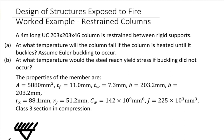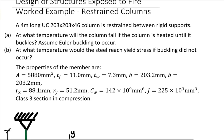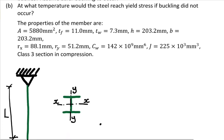A four meter long UC203x203x46 is restrained between rigid supports. At what temperature will the column fail if the column is heated until it buckles? Assume Euler buckling to occur. So we're going to use simpler Euler buckling to design the column, and then at what temperature would the steel reach yield stress if buckling did not occur? The properties of the steel section are listed.